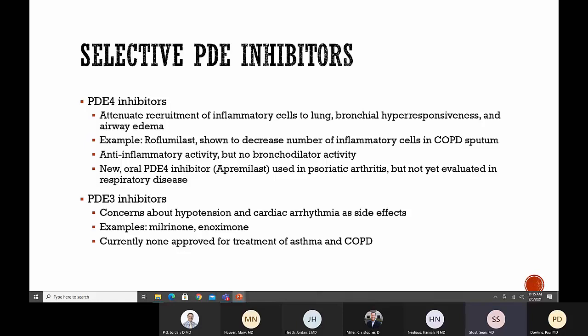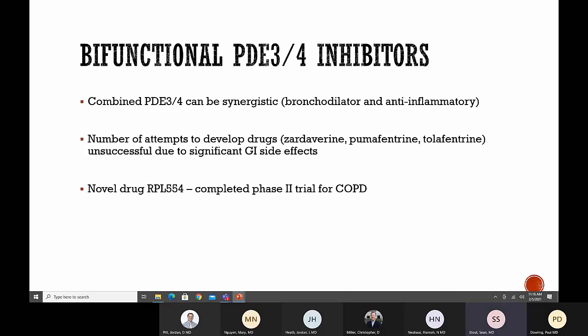There are also selective PDE3 inhibitors. PDE3 is found predominantly in airway smooth muscle, vascular smooth muscle, and the heart. There's significant concern for side effects of hypotension and cardiac arrhythmias. An example is milrinone, commonly used in heart failure in cardiac ICU. In respiratory disease clinical trials, it was correlated with increased deaths in CHF patients. There are no currently approved selective PDE3 inhibitors for asthma or COPD. There's evidence that bifunctional drugs acting on both PDE3 and 4 can be synergistic. A novel drug called RPL554 has completed phase two trials for COPD.